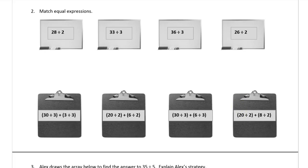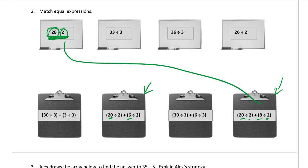Now we're matching equal expressions — we did this with multiplication and now we do it with division. For 28 divided by 2, we're looking for expressions with a divisor of 2. The dividends have to add up to 28. Here we have 20 and 6, that's 26 — not 28. Over here we have 20 and 8, that's 28. So 20 divided by 2 plus 8 divided by 2 is the same as 28 divided by 2.